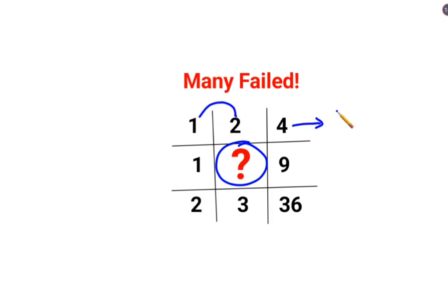I can write this as 2 square. And this 2 can be written as 1 into 2, means product of the first and the second column.